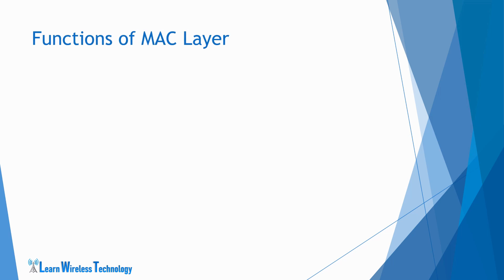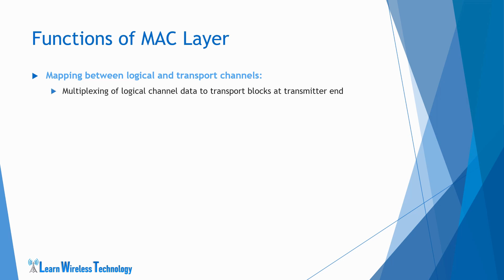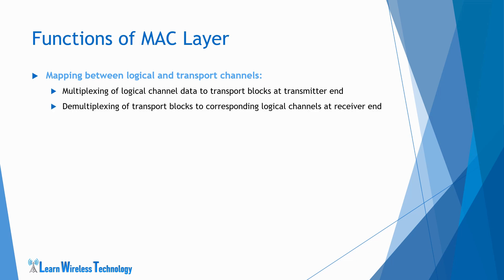Let's discuss more about some of the important MAC functions — mapping between logical and transport channels. The MAC layer maps the logical channels carrying RLC PDUs to the transport channels. At the transmitter end, which can be either E-NodeB or UE, multiple RLC PDUs — called MAC SDUs — from logical channels are multiplexed and mapped to transport blocks to be sent over transport channels for transmission over the air. At the receiver end, the transport blocks from transport channels are demultiplexed and assigned to corresponding logical channels, which are then transferred to higher layers.